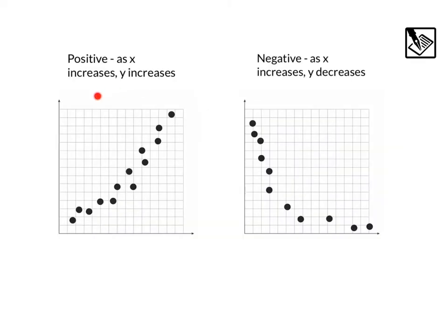Our first two associations are positive and negative. For a positive association, we know that as X increases, Y increases. That means as we move forward on the X axis, the Y values grow, they get bigger.